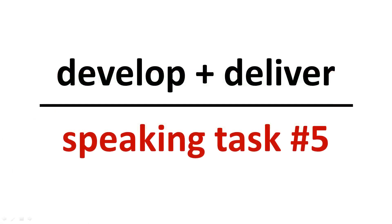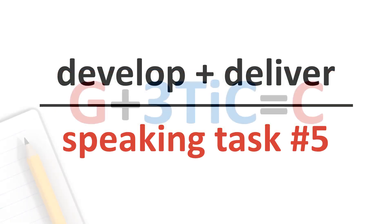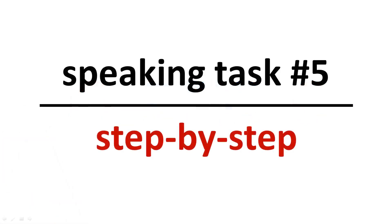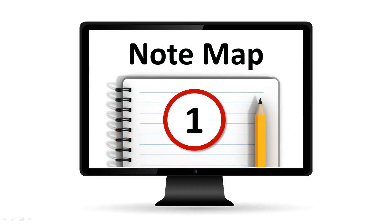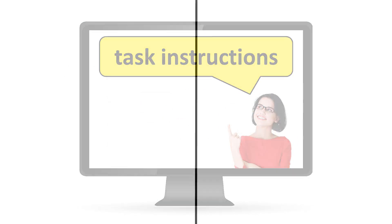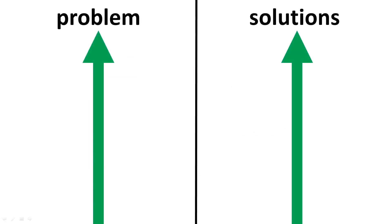You can develop and deliver a response for Speaking Task 5 using the argument map G3TICC. Follow these steps. Step 1: Make a note map. As you listen to the task instructions, make a note map. Divide a piece of paper in two. Put problem on the left and solutions on the right.